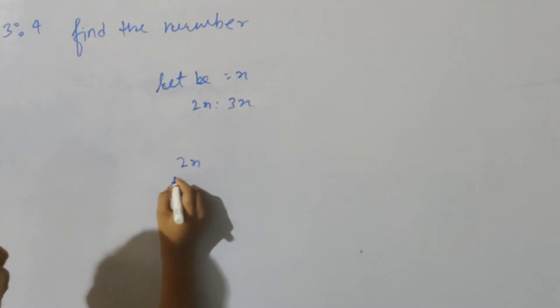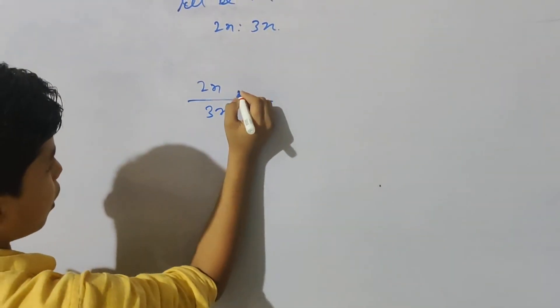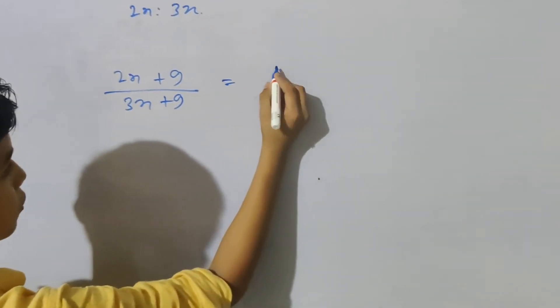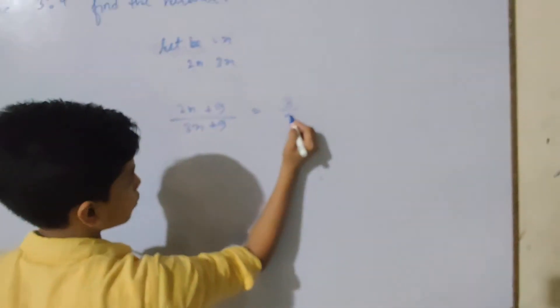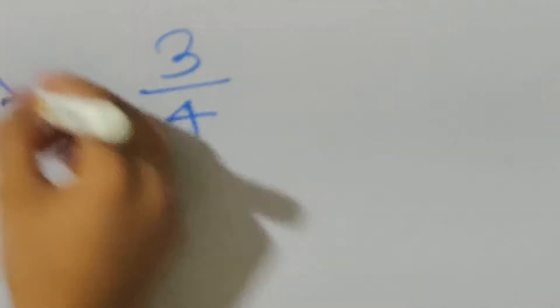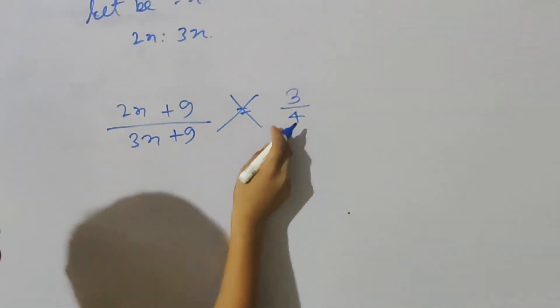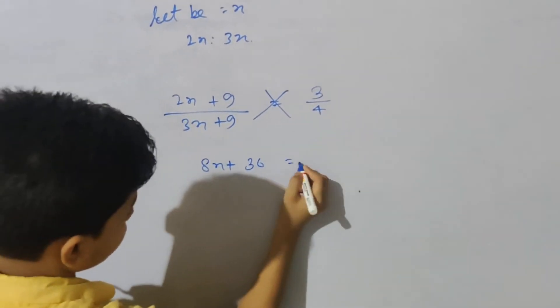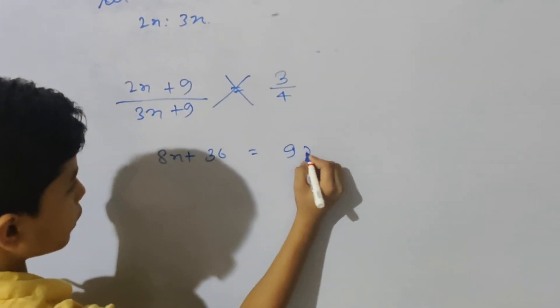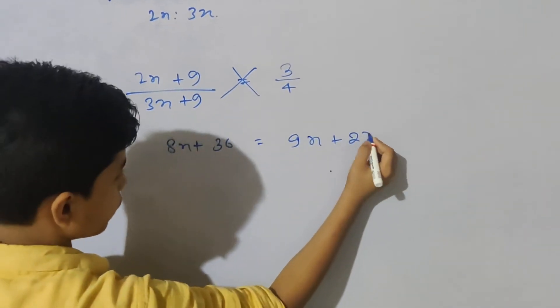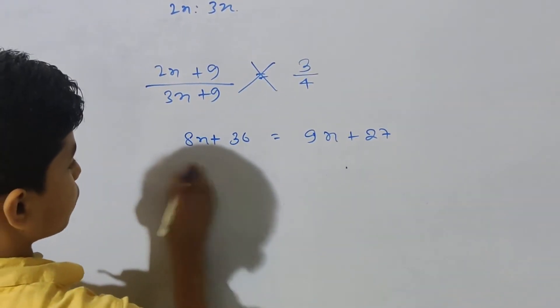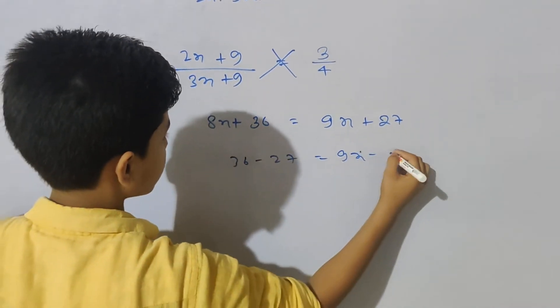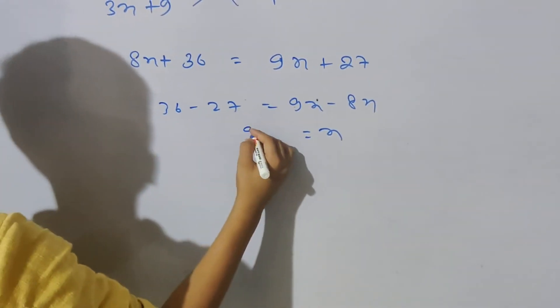So 2x upon 3x, and if 9 is added, (2x + 9) upon (3x + 9) equals 3 upon 4. Cross multiply: 4(2x + 9) equals 3(3x + 9). So 8x plus 36 equals 9x plus 27. Therefore 9x minus 8x equals 9, so x equals 9.